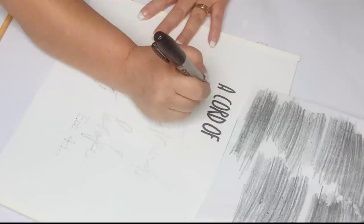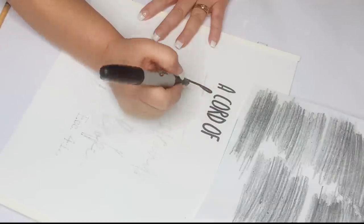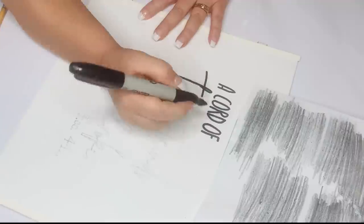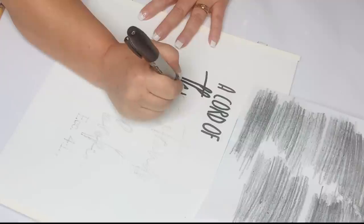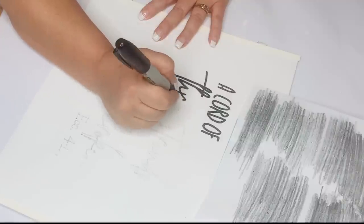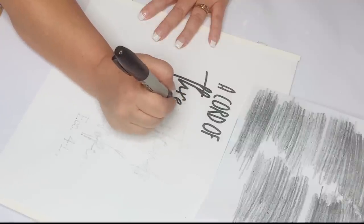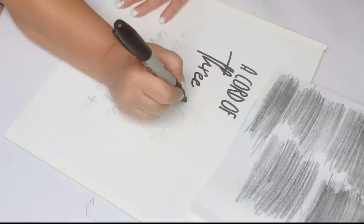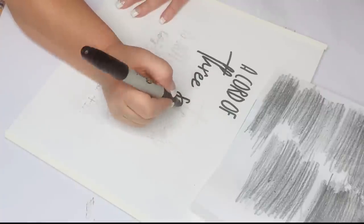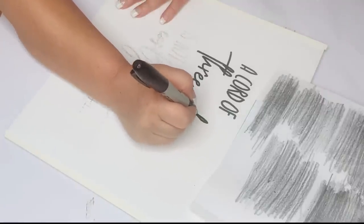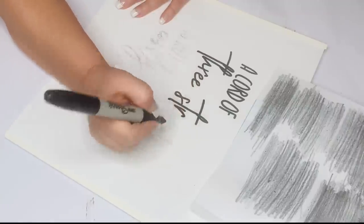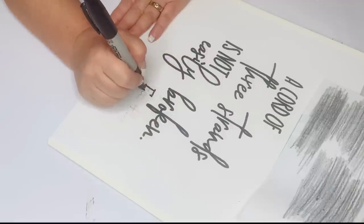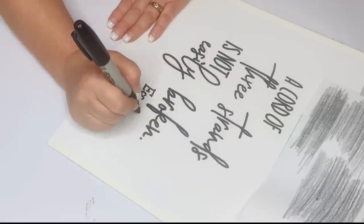And as you can see, I'm using the scripture Ecclesiastes 4:12, which says a cord of three strands is not easily broken. And so that would be the three, husband, wife, and Jesus. And so I thought that was the perfect scripture for this project. This would be a really good wedding gift if you wanted to make this ahead of time and use a photo from a couple's engagement pictures. You could even go on to Facebook and print out one of their pictures. And I just think it makes it more personal and from the heart if you make it yourself.